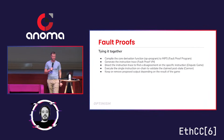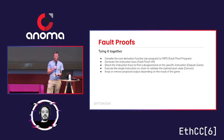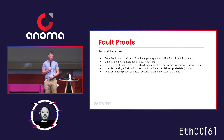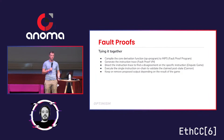Now we have all of these components. We compile the core derivation function — the OP program — to MIPS, which is now our fault proof program. We generate the instruction trace with our fault proof VM. We bisect it with the dispute game. We run this single instruction step with Canon, and then we can remove outputs depending on the results — we can remove outputs that are invalid, or if there's a malicious actor trying to remove a valid output or state commitment, we can say this is actually correct and leave it.